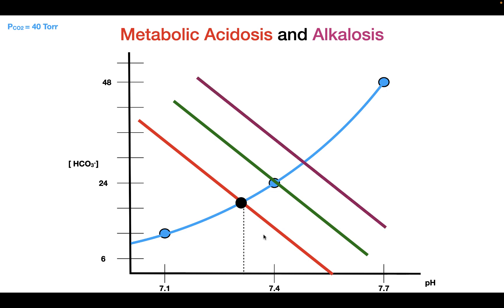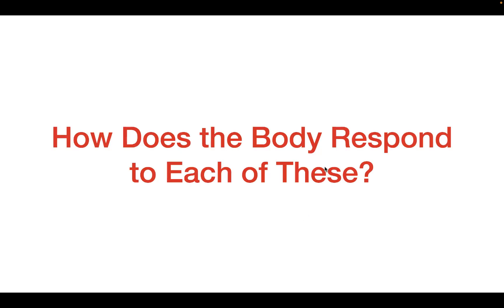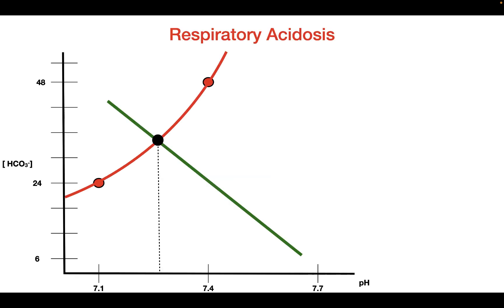A metabolic alkalosis would produce this curve where you get an upward shift, and this would produce a pH greater than 7.4. So how does the body respond to these four conditions? If you have a respiratory acidosis — remember this is producing a pH that is lower — in order to compensate, the body is going to produce a metabolic alkalosis.